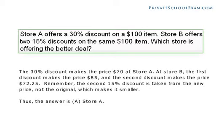Store A offers a 30% discount on a $100 item. Store B offers two 15% discounts on the same $100 item. Which store is offering the better deal? The 30% discount makes the price $70 at Store A. At Store B, the first discount makes the price $85, and the second discount makes the price $72.25. Remember, by offering two 15% discounts, the second 15% is taken from the new price, not the original price. Thus, the answer is A, Store A.